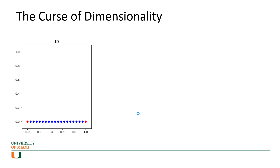Let me give more concrete examples about the curse of dimensionality and why we want to reduce dimensionality. Suppose you have one feature, X1, with values ranging between 0 and 1. If you want to figure out the percentage of outliers in this space, where an outlier is defined as something at 1% distance from the border, then any point larger than 0.99 or smaller than 0.01 is considered an outlier.